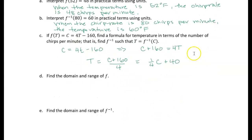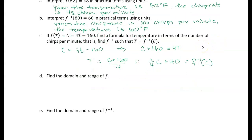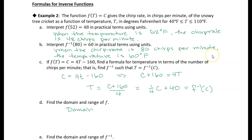Now we have the inverse function — we can call it F inverse — where the input is the chirp rate. Next the question asks for the domain of F. So we're back to our original function. What is the domain and range of F? Well, we were given the domain — we were given the T values. The domain is just what was given: T is an element of the set from 40 to 110, in degrees Fahrenheit.